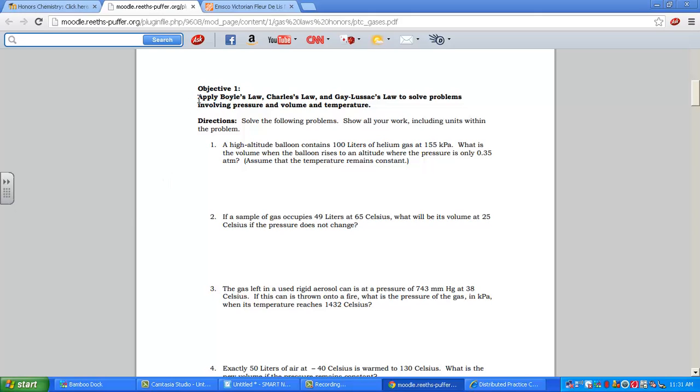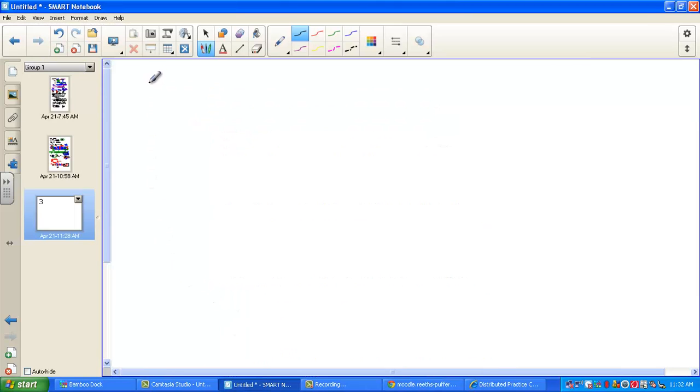The first objective deals with Boyle's Law, Charles's Law, Gay-Lussac's Law, and how to problem solve with pressure, volume, and temperature. With this set of problems, one of the variables is held constant and will simply fall out of our combined gas law equation. We have out our test taking tool formula page. Boyle's Law, P1V1 is equal to P2V2. Temperature is held constant. Charles's Law, V1 over T1 is equal to V2 over T2. And Gay-Lussac's Law, P over T is equal to P over T, where volume is held constant. With this particular set of algebra problems, volume can be in milliliters. It is not required to be in liters as it is in a combined gas law problem.